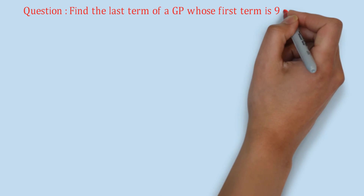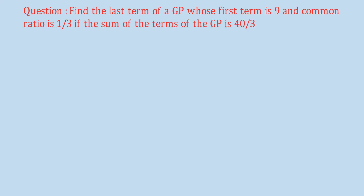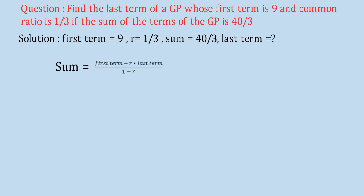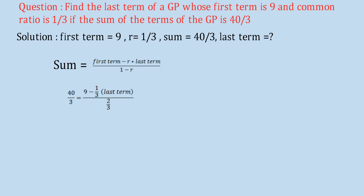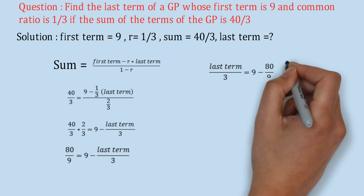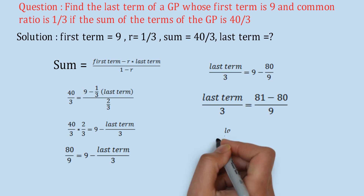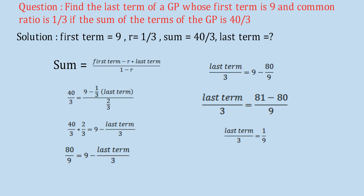Next question: Find the last term of a GP whose first term is 9 and common ratio is 1/3, if the sum of the terms is 40/3. Given: A = 9, R = 1/3, S = 40/3; find the last term. Number of terms is not given, so we use the same formula. With R < 1: 40/3 = (9 − (1/3) × last term) / (2/3). Solving: 80/9 = 9 − last term/3, so last term/3 = 1/9, giving last term = 1/3.